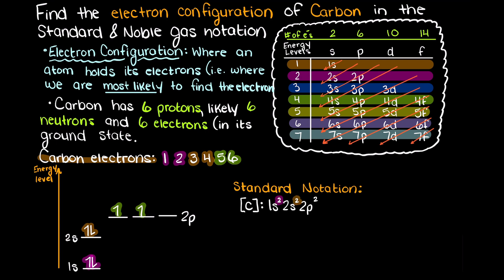If you want to write the noble gas notation, we look at the noble gas underneath carbon, which is helium, and it has 2 electrons and a standard electron configuration of 1s2. Therefore we can substitute this portion of our standard electron configuration notation and rewrite it like so to convert it to the noble gas notation.